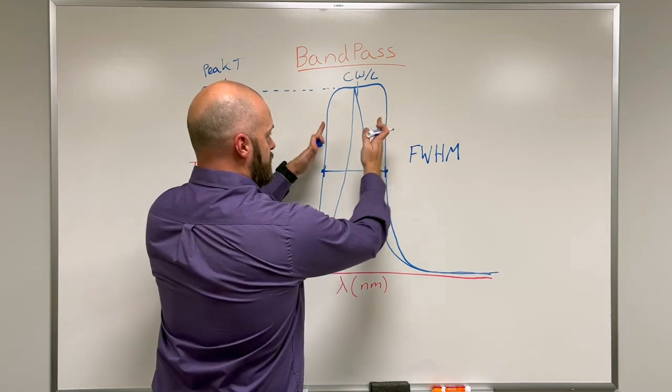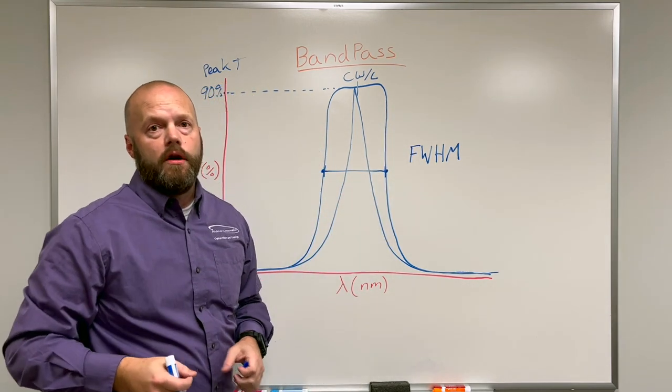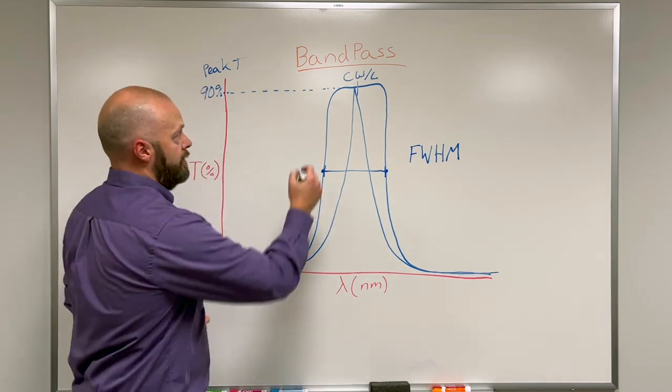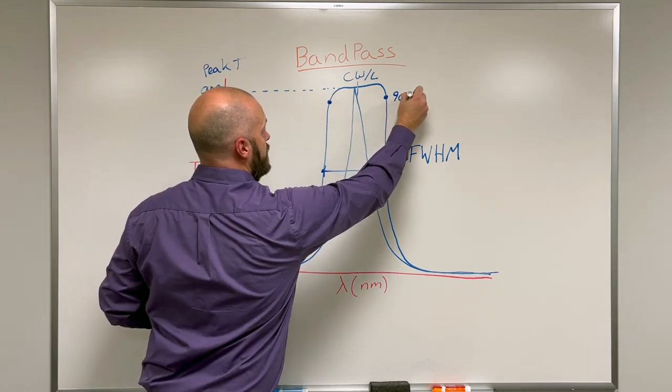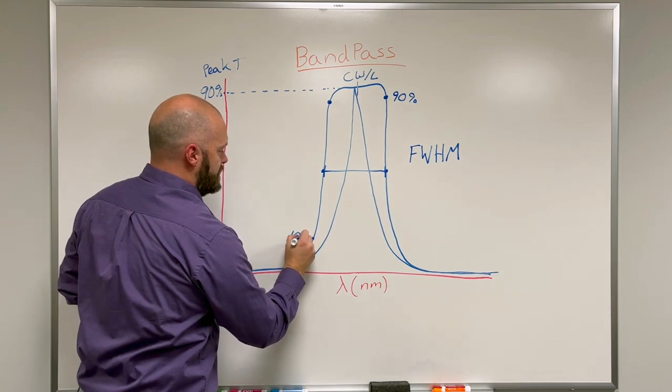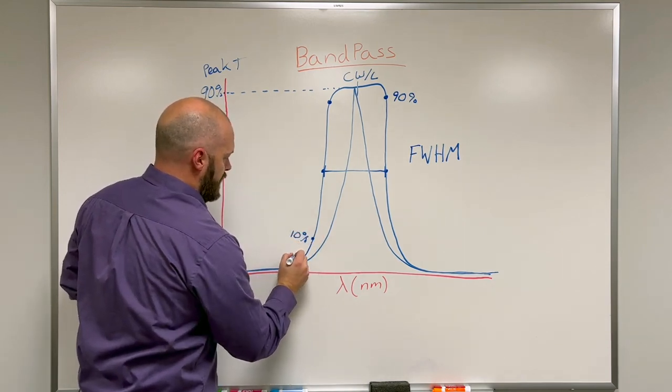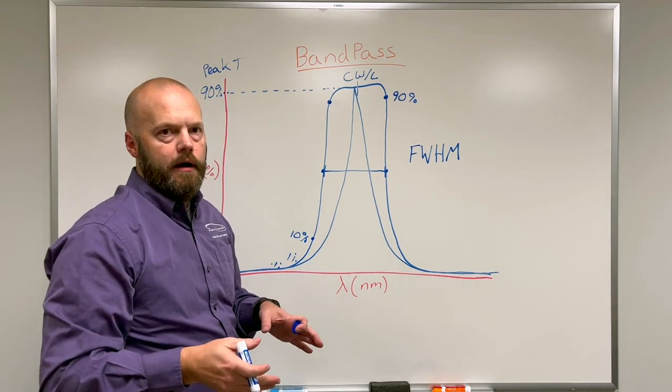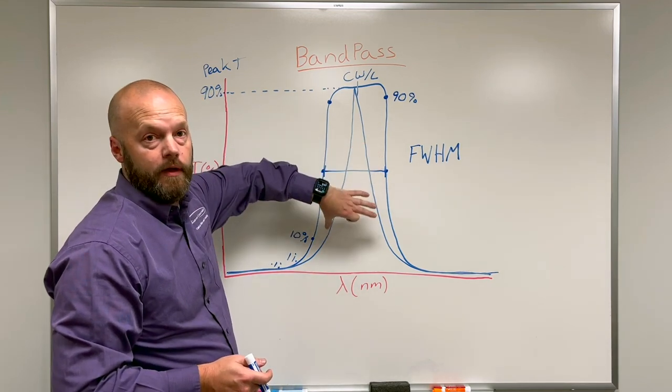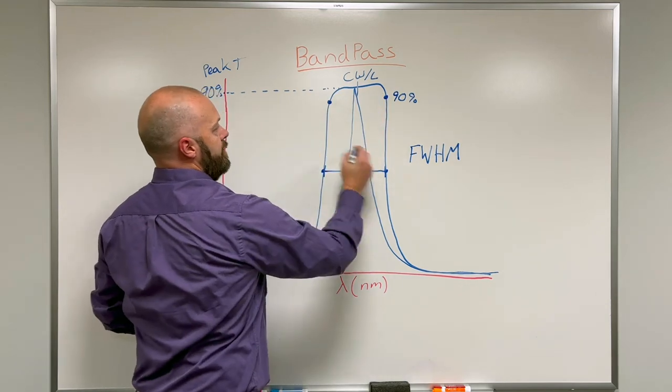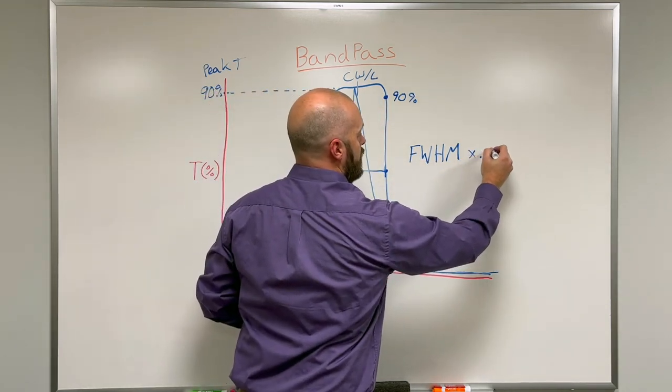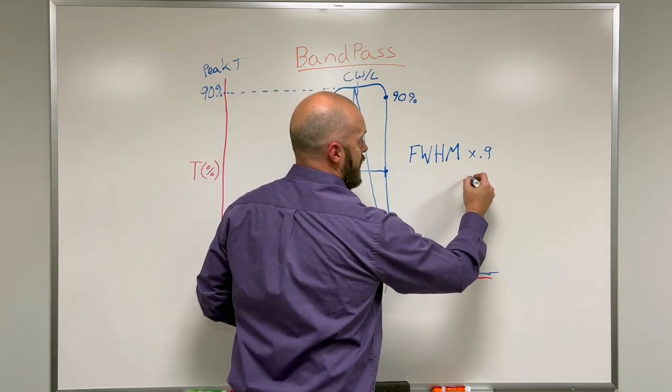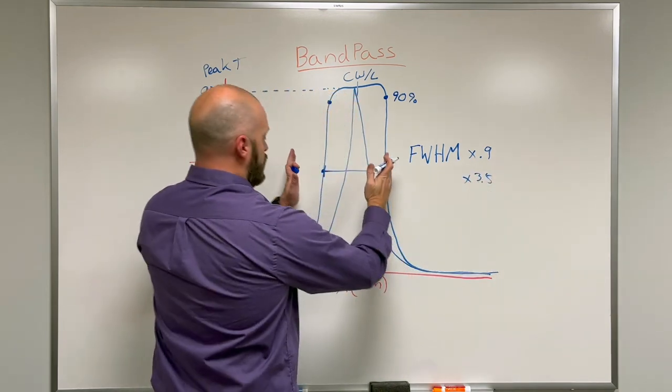The more repetition of that pattern, you don't necessarily change the bandwidth, but you do change the steepness of sides. In the catalog we've defined the widths at different points to identify the steepness of the sides. We have your 90%, and we also have your 10%, 1%, 0.1%, and so on. What it shows is the factor of your bandwidth. At 90% T you may have your full width half max multiplied by 0.9, and at your 10% point you could have your full width half max times say a factor of 3.5 or something, that would depend on the bandwidth and how many cavities.